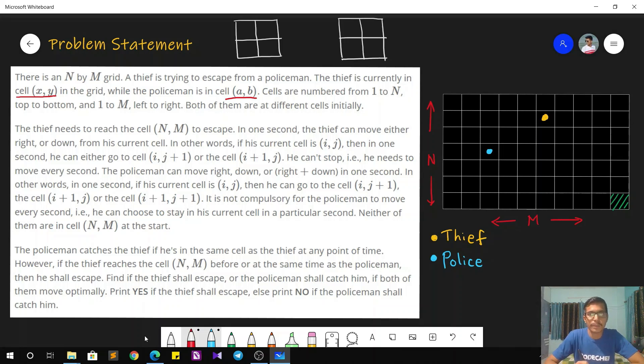Now the question further mentions the type of movements both of them can do. The thief, if starting from a particular cell, can either go down by one cell or to the right. These are the only two movements allowed for the thief, whereas the policeman can go either to the right or down or diagonally—either right, down, or right plus down. Also, the thief cannot stop; once he starts from the starting position, at each point of time he has to make some move, either go right or go down.